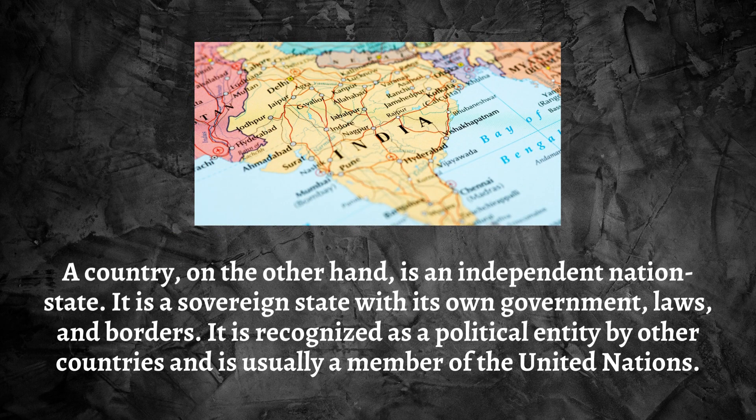A country, on the other hand, is an independent nation-state. It is a sovereign state with its own government, laws, and borders. It is recognized as a political entity by other countries and is usually a member of the United Nations.